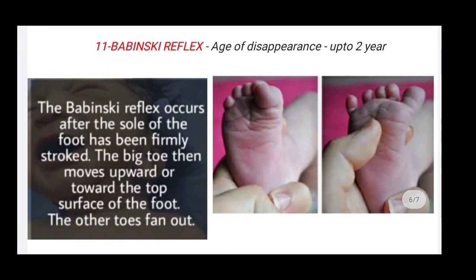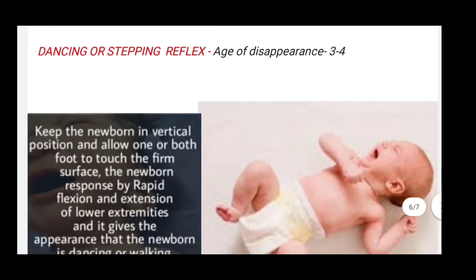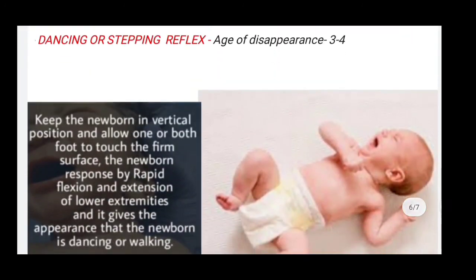Next is the Babinski reflex, with an age of disappearance of up to two years. The Babinski reflex occurs after the sole of the foot has been firmly stroked. The big toe then moves upward or toward the top surface of the foot, and the other toes fan out. In this image you can see the sign — the big toe moves upward toward the top surface of the foot while the other toes fan out slightly.